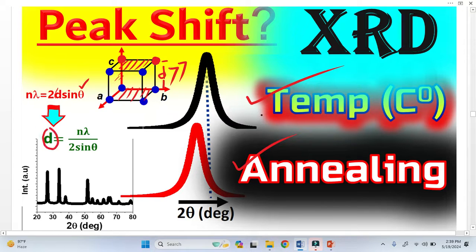This is the interplanar spacing and this is the peak position theta in the XRD pattern. So when we have large interplanar spacing, we will have a smaller angle. And a smaller angle means that the peak will shift toward the left.